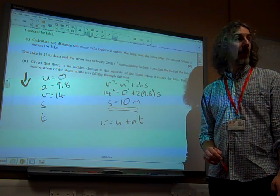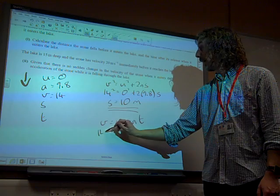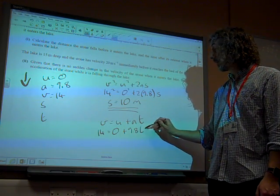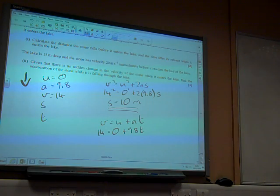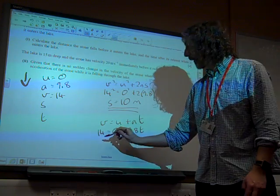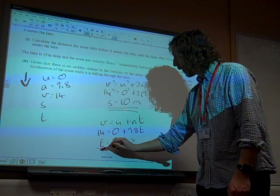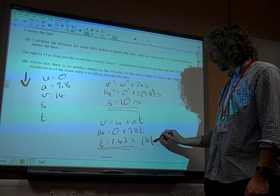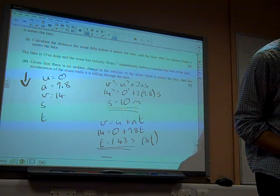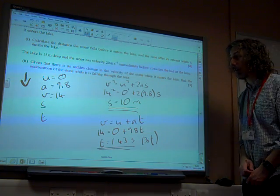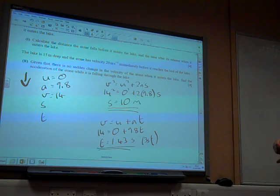Question. And so, 14 is 0 plus 9.8 times t. And 14 divided by 9.8 gives us 1.43 seconds. That's to 3 significant figures because that is, what is it, 10 over 7. 10 over 7. So you can write that exactly. Great. Four really nice marks.